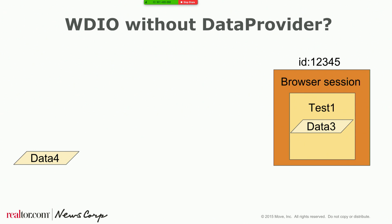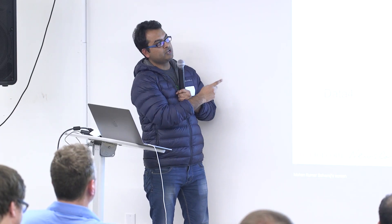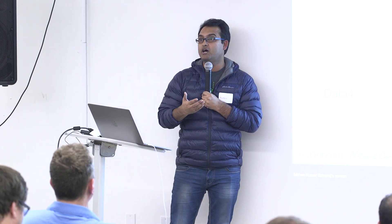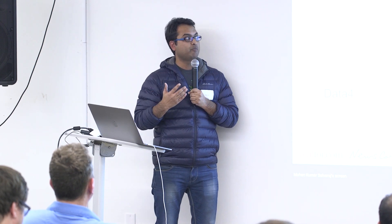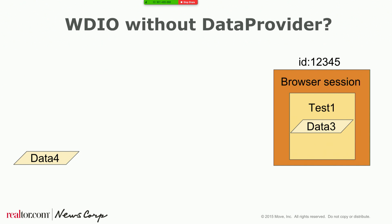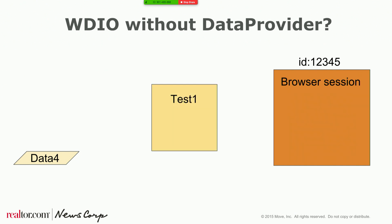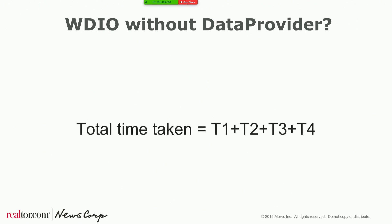There are two problems. First, if your test is stateful — meaning browser state from the previous run carries forward to the next run — it can corrupt your test output, producing completely incorrect results. Second, it runs in sequential fashion: data set one, then two, then three. At the end, execution time is the sum of all those individual execution times.